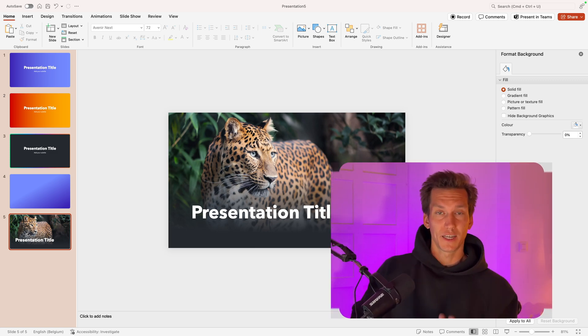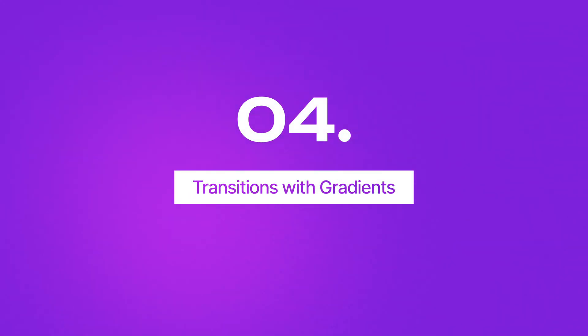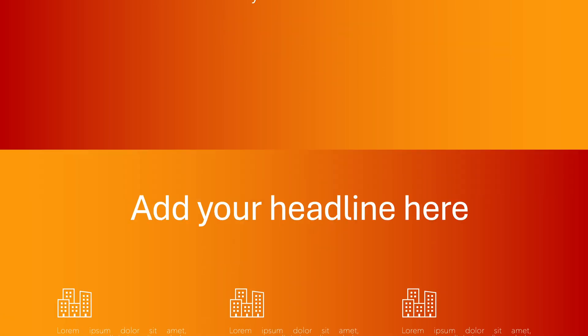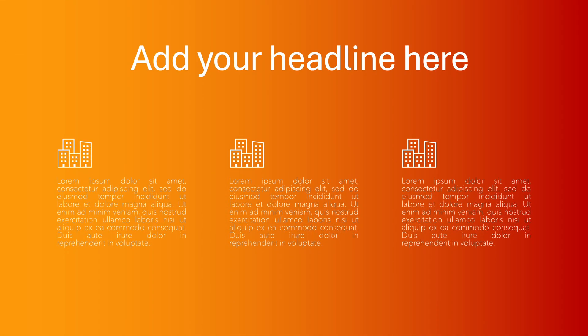Now let's move to the fourth part: transitions. If you have a presentation with a lot of gradients, it can sometimes be difficult to connect them together. Just have a look at this example — when we use a transition that connects the slides, it looks a bit odd and the gradients mess up the smoothness of the presentation. If you want to get rid of that, there's a very simple trick.